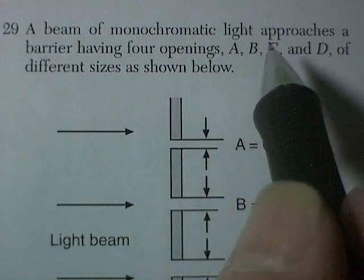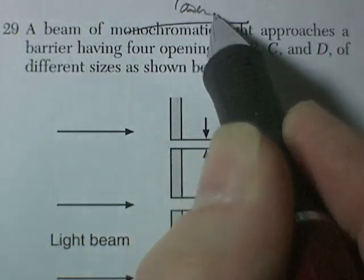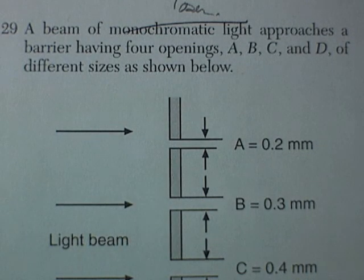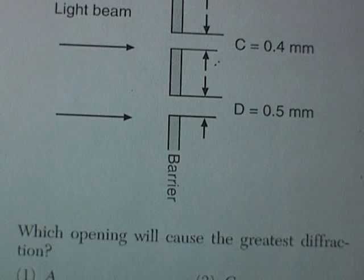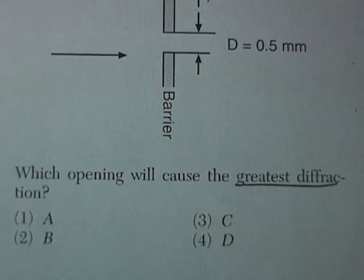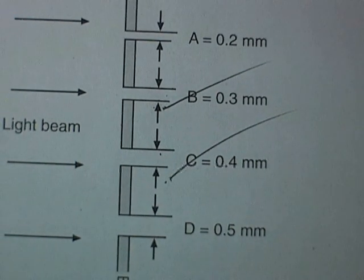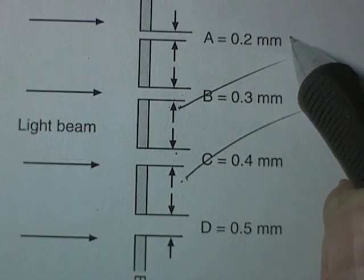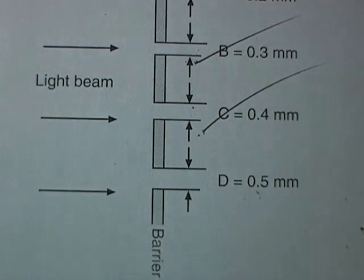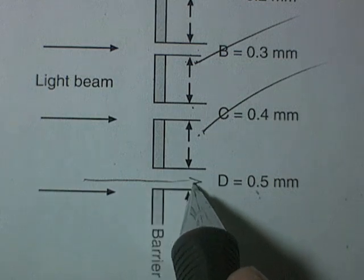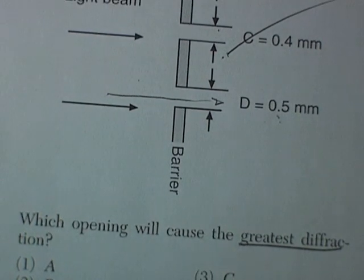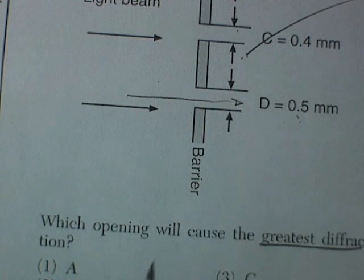A beam of monochromatic light. Read that as laser. A laser approaches a barrier having four openings, A, B, C, and D, different sizes. 0.2, 0.3, 0.4, 0.5. Which opening will cause the greatest diffraction? Well, greatest means you're going from one of the extremes to the other. So we eliminate B and C right off the bat because they're in the middle. We want 0.2, the smallest barrier, greatest diffraction, or the largest opening. As it turns out, a laser could go right through this without interfering at all. The correct answer is the smaller the opening, the larger the diffraction pattern. Which opening causes the greatest diffraction? That would be A.